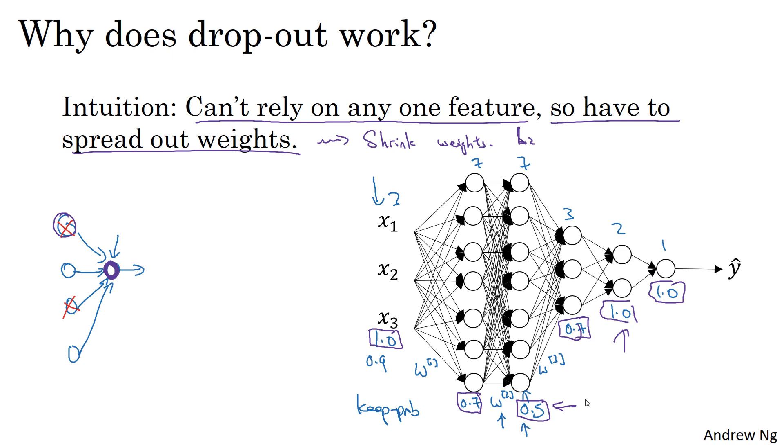And before we wrap up, just a couple of implementation tips. Many of the first successful implementations of dropout were to computer vision. So in computer vision, the input size is so big, you're inputting all these pixels, that you almost never have enough data. And so dropout is very frequently used by computer vision. And there are some computer vision researchers that pretty much always use it, almost as a default.